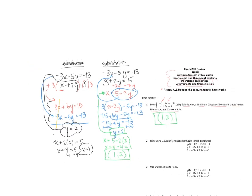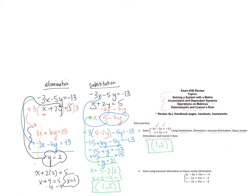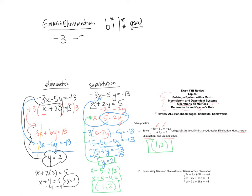The next method is Gaussian elimination. We want to turn this into an augmented matrix and get a diagonal of 1's with a 0 below — then use back substitution. Our augmented matrix is: negative 3, negative 5, negative 13 in row 1, and 1, 2, 5 in row 2.